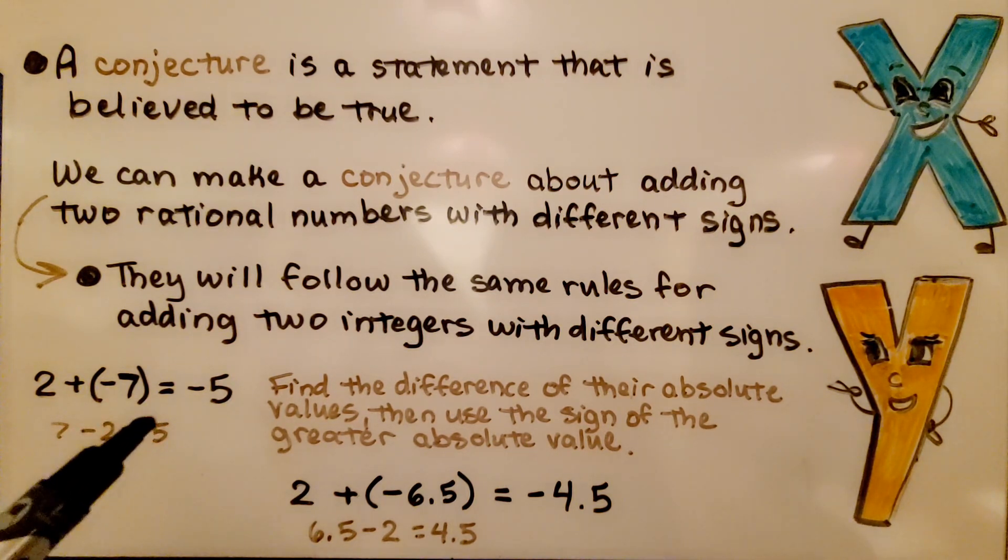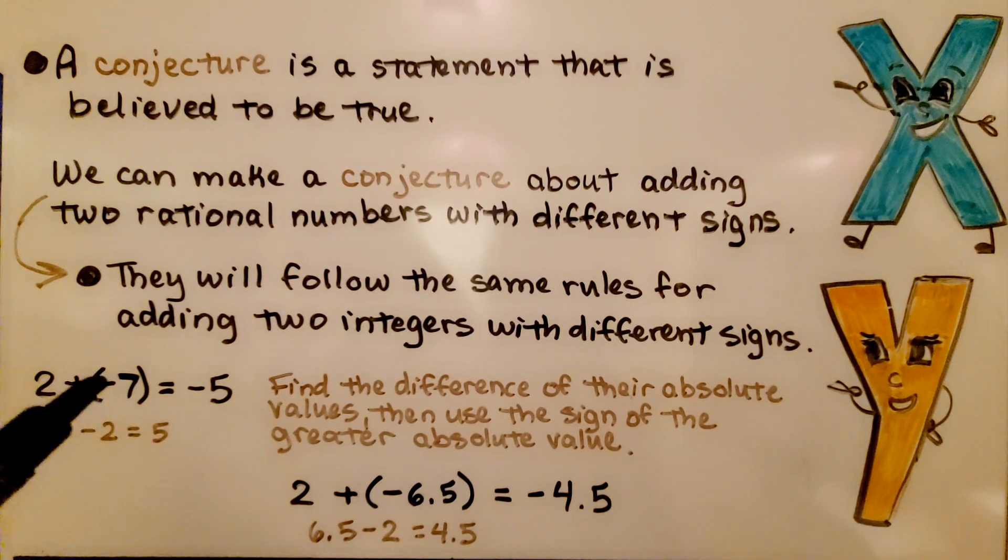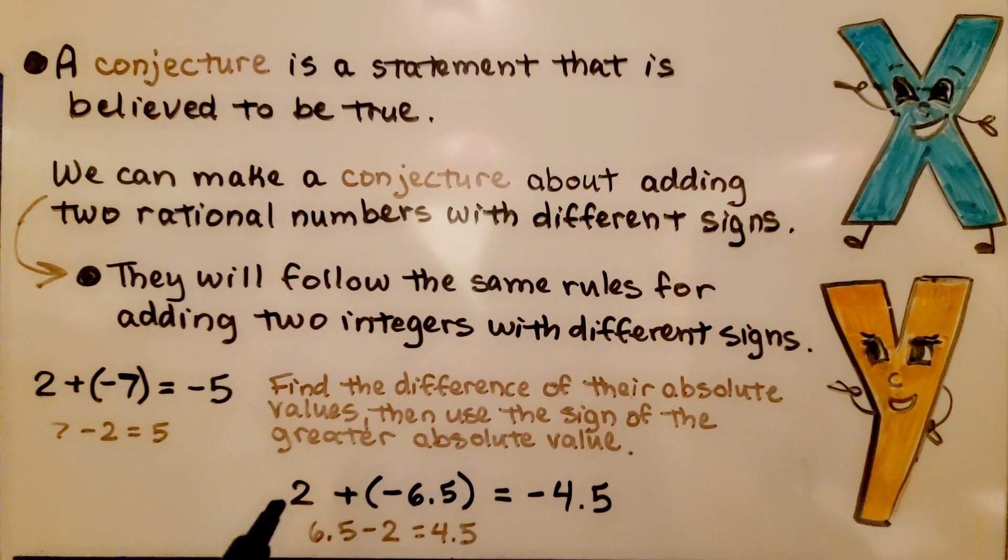And then we use the sign of the greater absolute value, 7 is farther away from 0 and it's negative. If we have positive 2 plus negative 6.5, we find the difference between them. That would be 4.5. We take the sign of the greater absolute value. That would be the negative 6.5.